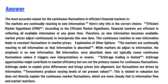According to the Efficient Market Hypothesis (EMH), financial markets are efficient in reflecting all available information at any given time. Therefore, as new information becomes available, market prices adjust continuously to incorporate this new data. This continuous reaction to new information leads to constant fluctuations in market prices.